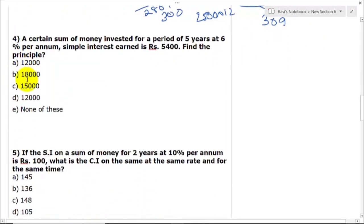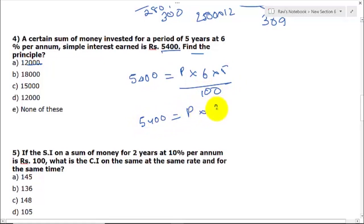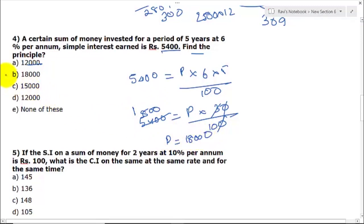Question 4: A certain sum is invested for 5 years at 6% per annum. Simple interest earned is Rs.5,400. Find the principal. Using SI = P × R × T / 100: 5400 = P × 6 × 5 / 100, so P × 30 = 540,000, giving P = 18,000. The answer is option B.